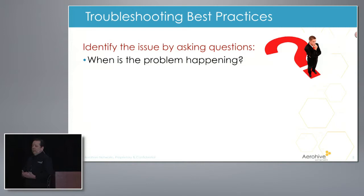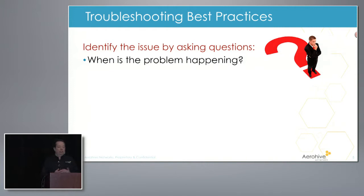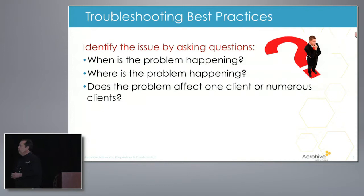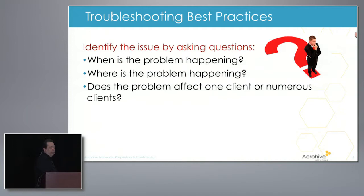When is the problem happening? Is there a problem with your wireless connectivity all day long, or only at certain times? If it's happening at certain times, say at lunchtime near the break room, it might be a microwave oven. Where is the problem happening? Is it throughout your entire facility or in one location, like just in the break room? Is the problem affecting all your clients, or is it just the CEO's laptop? If it's just one device, you can usually look back to that particular client and not necessarily the wireless LAN infrastructure.